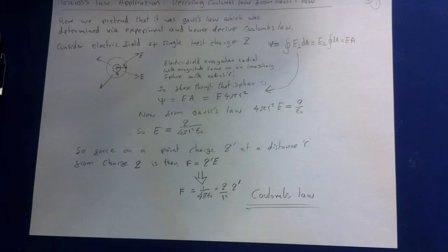Right, so consider the electric field of a single positive point charge q as shown here. This is the point charge here. We've drawn an imaginary Gaussian surface around the outside. By symmetry, the field is everywhere radial.